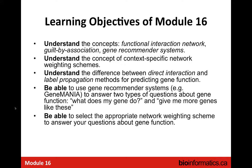We're going to move towards answering two types of questions about gene function. One is: what does my gene do — what is its function? And the other question is: give me more genes like these. So if I have a list of genes involved with Wnt signaling, can you find more genes like these Wnt signaling genes? The data we're going to use are interaction networks, which can be kind of complicated, incomplete, and whose meaning is not always entirely clear.